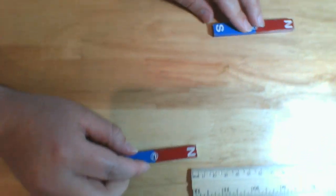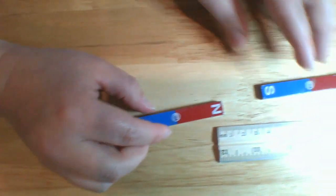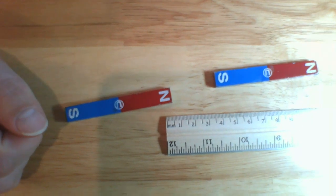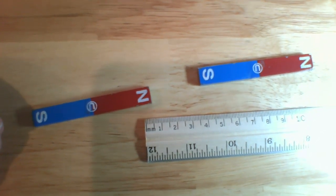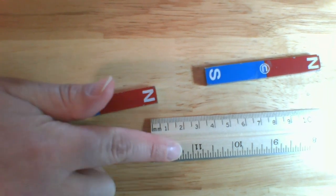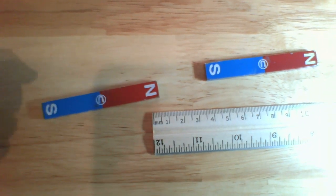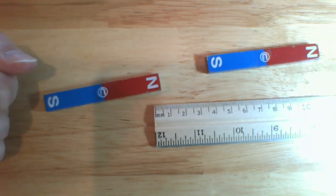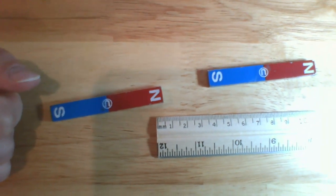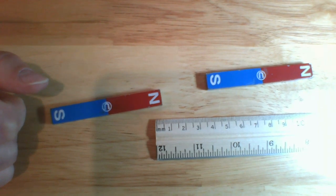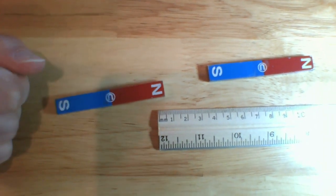I'm going to put a ruler next to these magnets so that we can get a better idea of how far apart the magnets are and how they move. This ruler is not changing the energy in the system, so it is not a part of the system. It's just a way we can get a rough idea of how things are moving in the system.